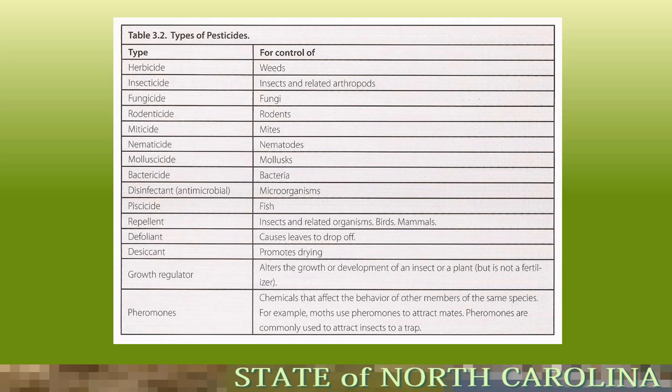Types of pesticides include herbicides for weeds, insecticides for insects, fungicides, rodenticides, repellents, defoliants, desiccants, growth regulators, and pheromones. Plant growth regulators are especially useful in commercial landscape maintenance — for example, after pruning dwarf Burford hollies, when new growth appears you can apply a plant growth regulator to reduce pruning frequency throughout the growing season. Pheromones are chemicals that affect behavior of members of the same species; moths use them to attract mates.